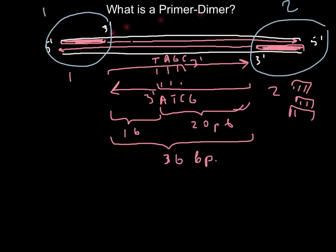Of course we start our PCR with millions and billions of primers, of primers number one and billions of primers number two. So primer number one on the left and primer number two on the right.